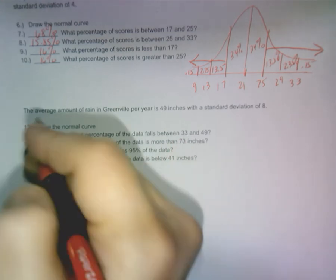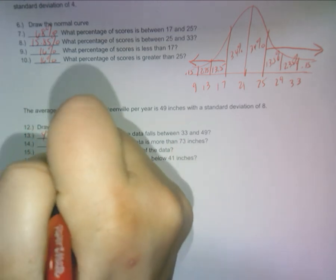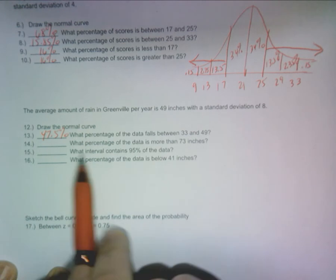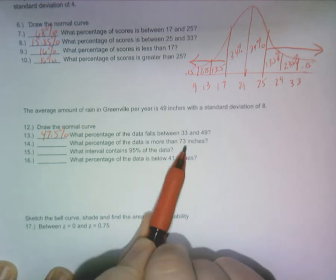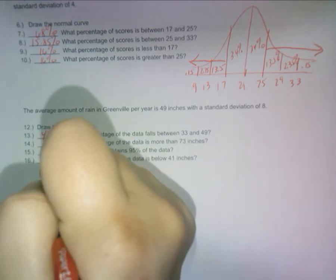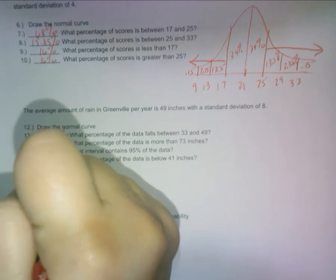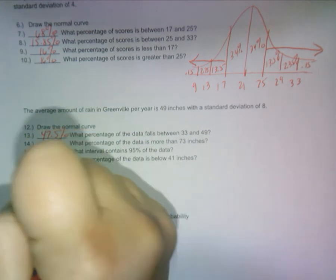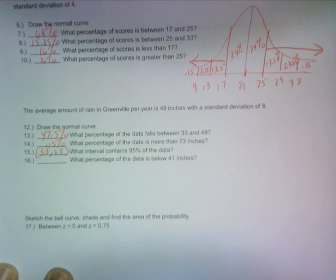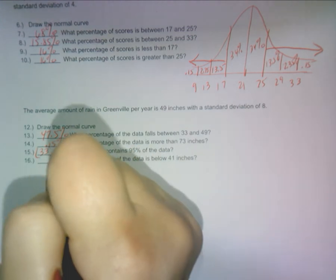If you don't know this by now, I'm sorry, but here's what you should have for this one. What percentage of data falls between 33 and 49? It's 47.5%. What percentage of data is more than 73? You should have 0.15%. What interval contains the 95% data? That would be up to the second standard deviation. You should say from interval 33 to 65. And what percentage of data is below 41 inches? The percent is 16%.